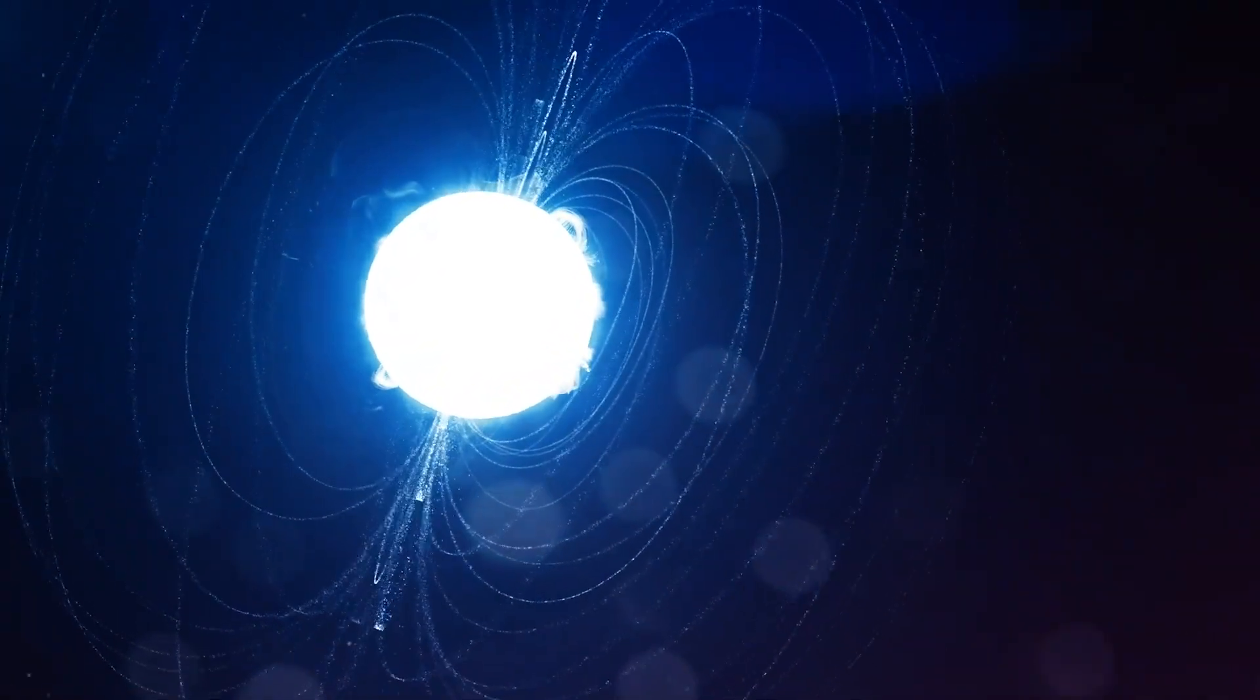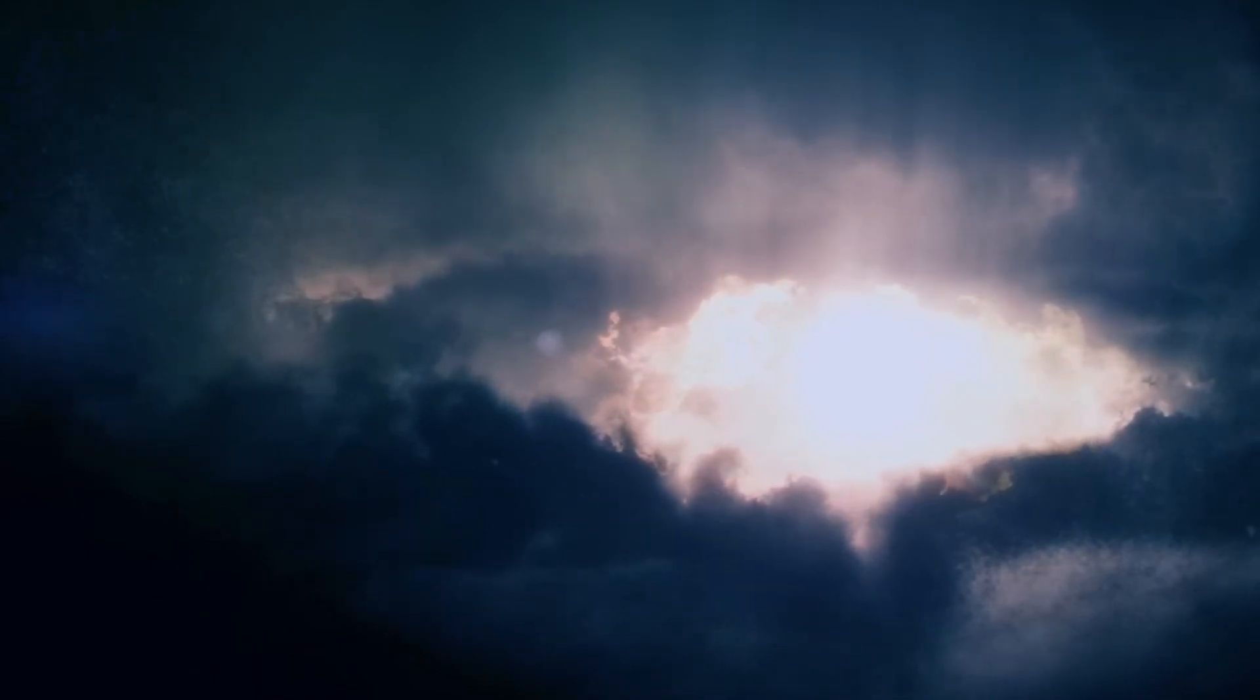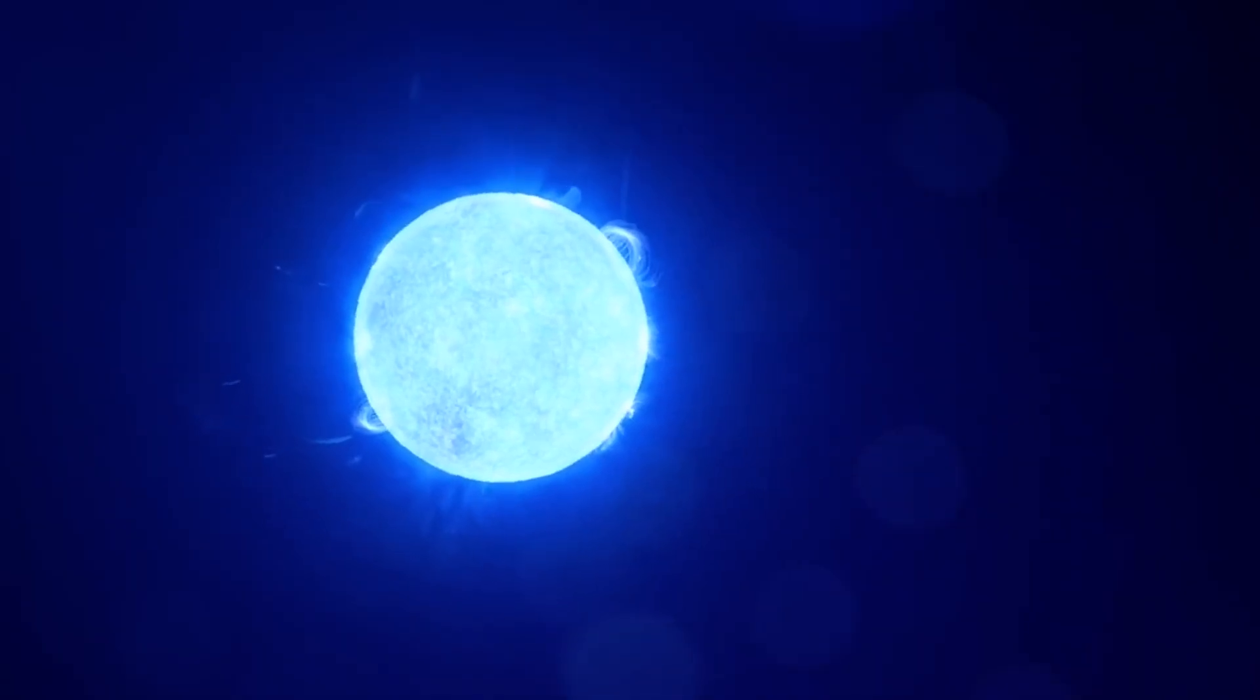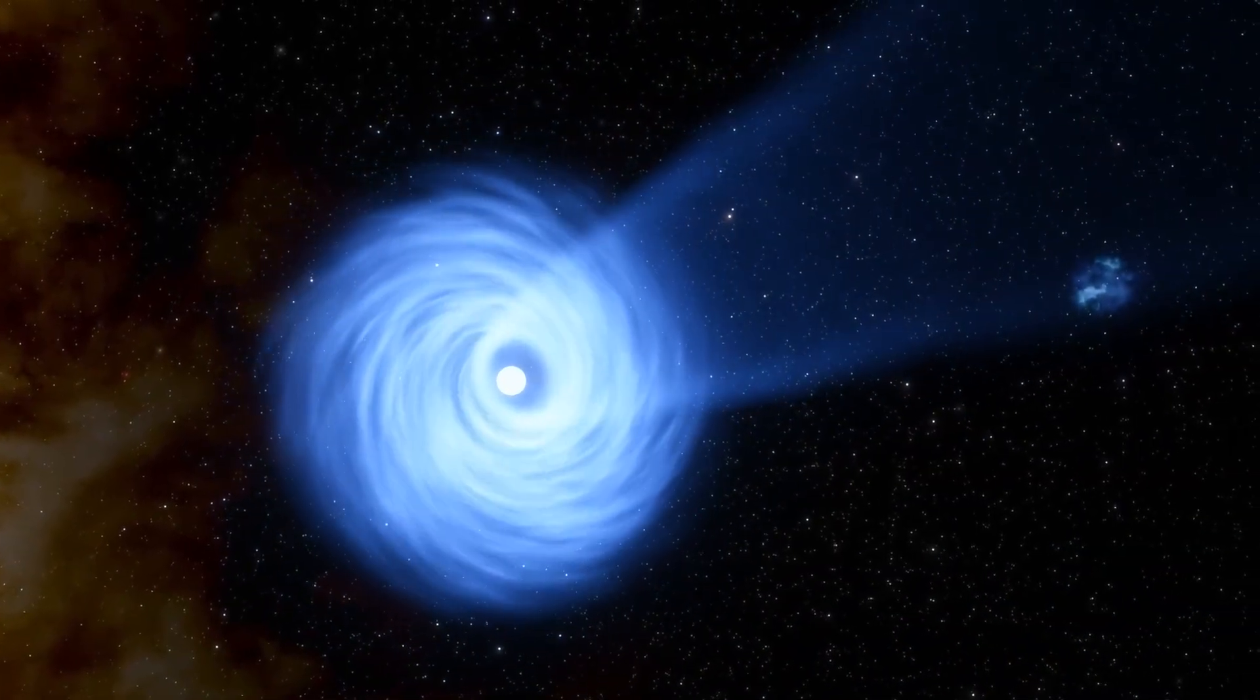Earth's magnetic field protects us from solar radiation, but compared to a neutron star, it's practically nothing. A neutron star's magnetic field can be a trillion times stronger. To put that in perspective, if you were anywhere nearby, it could literally rip the atoms in your body apart just by tugging at the electrons. And as if that wasn't enough, their surface temperatures can reach millions of degrees—hotter than anything we can create in the most advanced nuclear reactors on Earth. Yet somehow, despite all this violence, they remain stable, spinning in silence across the galaxy.